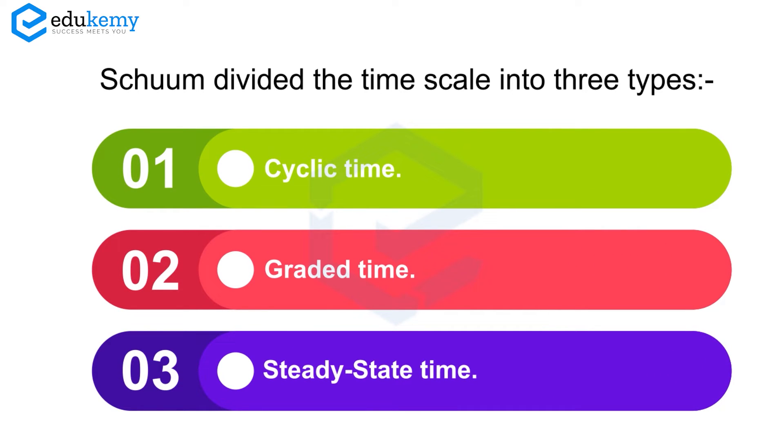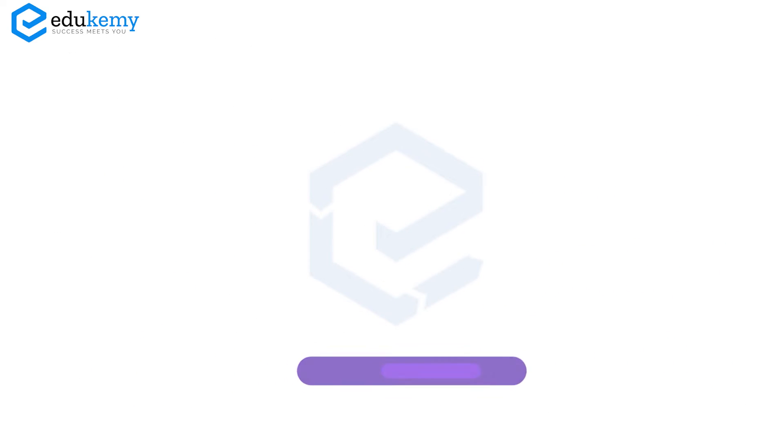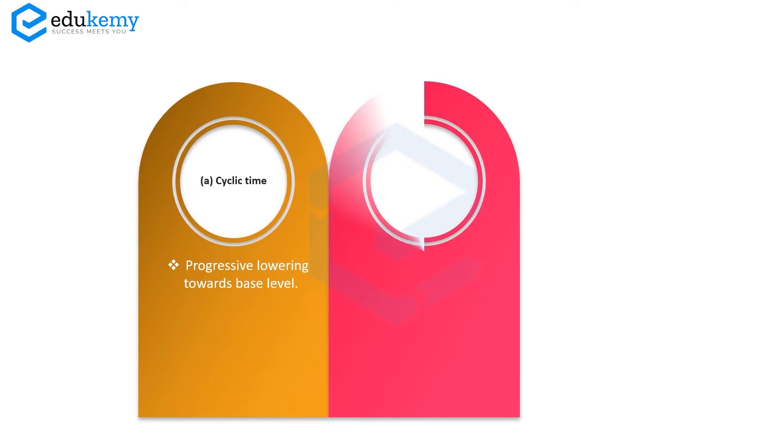Cyclic time - if we see landforms, there is progressive lowering towards the base level. Then we have graded time. Graded time is on smaller scales, maybe 100 to 1000 years.